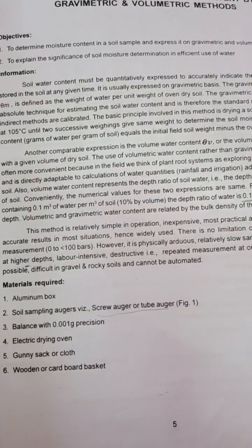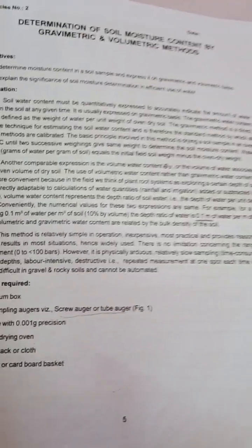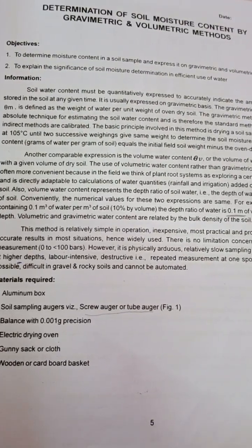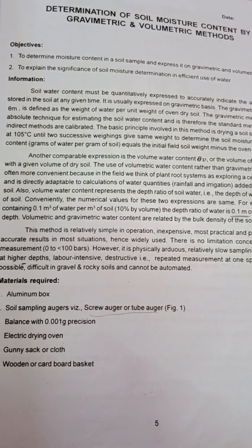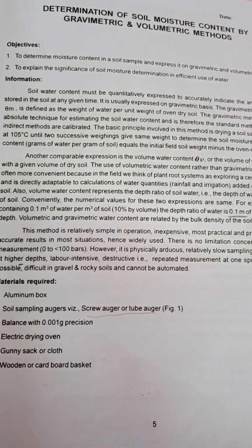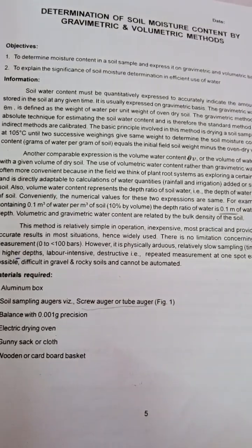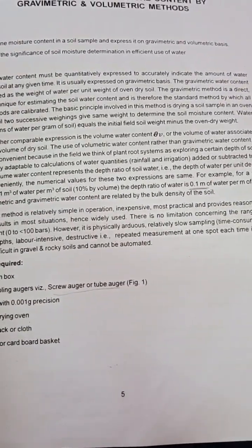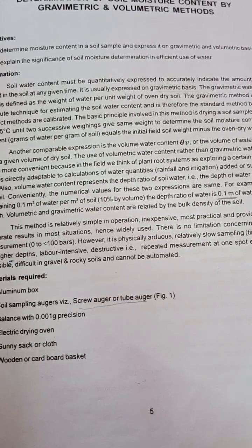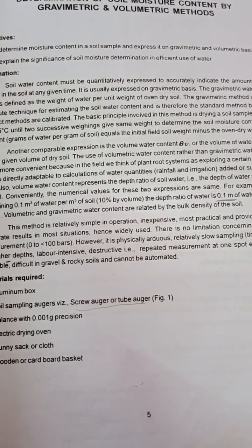Soil water content must be quantitatively expressed to accurately indicate the amount of water stored in the soil. Soil water content is the amount of water stored in the soil at any given time. It is usually expressed on a gravimetric basis. The gravimetric water content is defined as the weight of water per unit weight of oven dry soil.